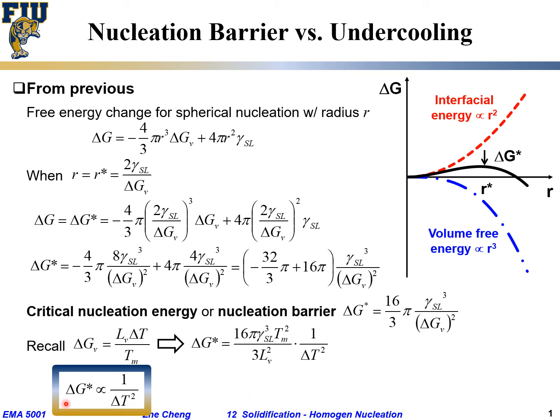ΔG* depends on the inverse of the square of undercooling. What does this mean? When ΔT goes towards zero, which means undercooling becomes smaller and smaller, this ΔG* becomes infinite.